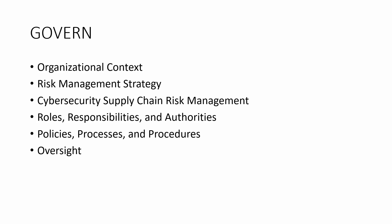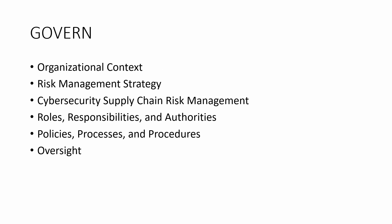Under governance we have some sub-practices. The first is called organization context. The second is building a risk management strategy. We also need a different strategy for supply chain since we take a lot of services from vendors. We need to document roles and responsibilities, build policies, processes, and procedures. And most importantly, we need a matrix to monitor all these sub-practices. But in this video, we're going to discuss only organization context.